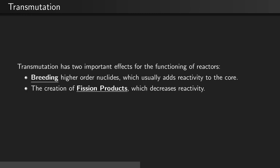Transmutation, therefore, has two important effects for the functioning of reactors. The first is called breeding, which represents higher-order nuclide creation, which usually adds reactivity to the core. The other is the creation of fission products, which generally decreases reactivity.